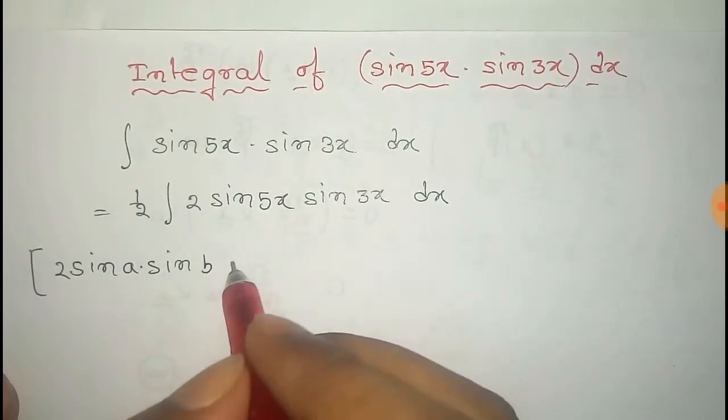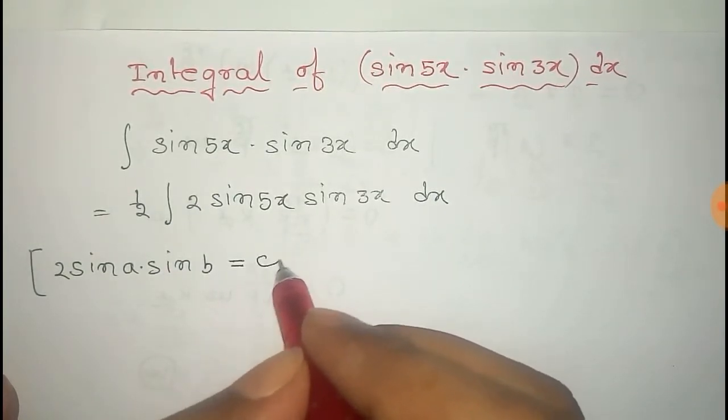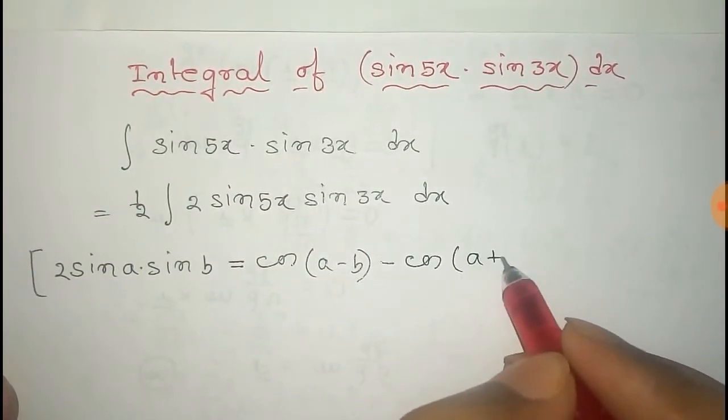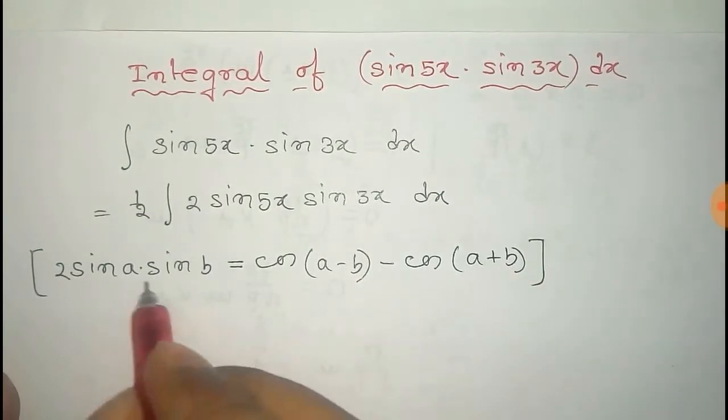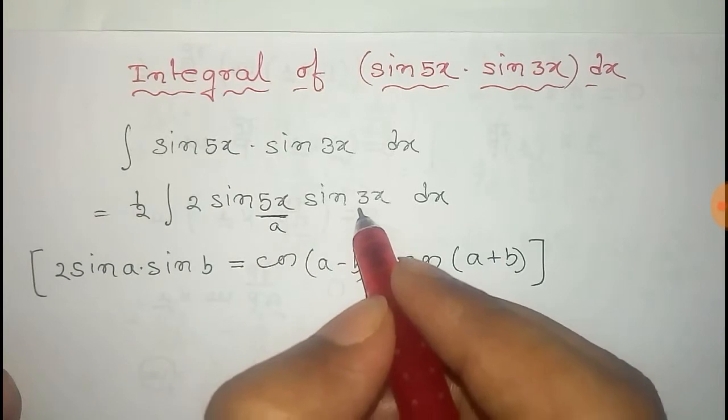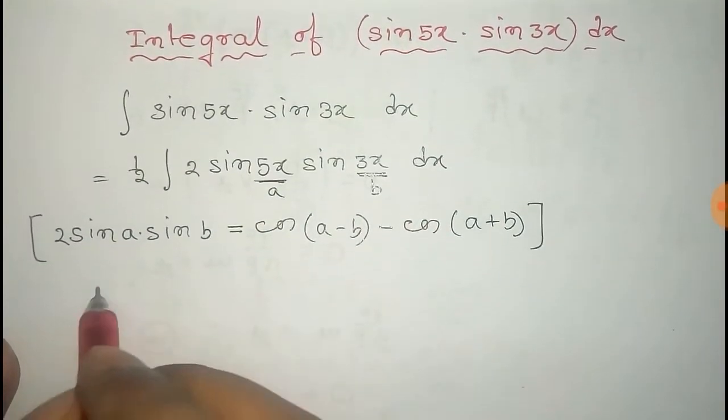And this formula is given by that is equals to cosine a minus b minus cosine a plus b. Now you apply this formula in that case taking 5x equals to a and 3x equals to b.